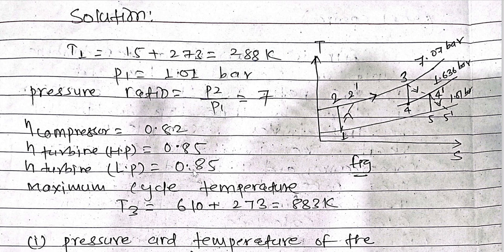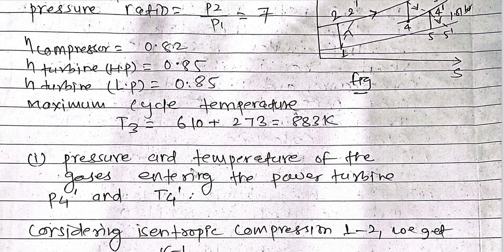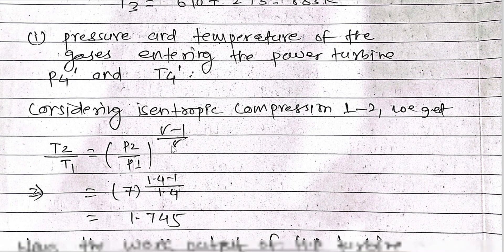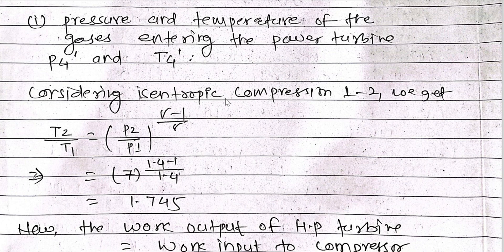The efficiency of the compressor is 0.82, efficiency of the HP turbine is 0.85, and efficiency of the LP turbine is 0.85. The maximum cycle temperature T3 = 610°C + 273 = 883 K. We now need to find the pressure P4 and temperature T4 of the gas entering the power turbine.